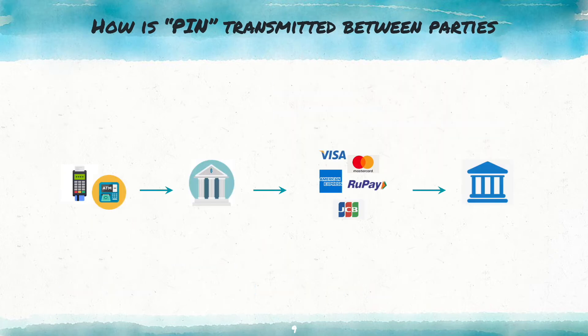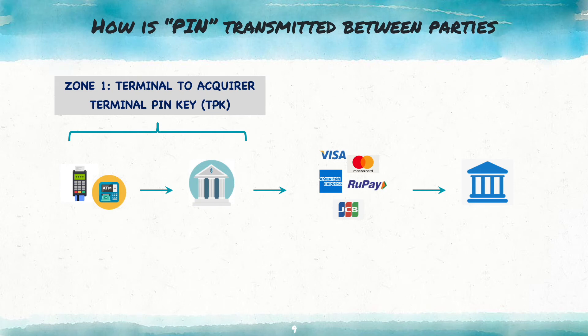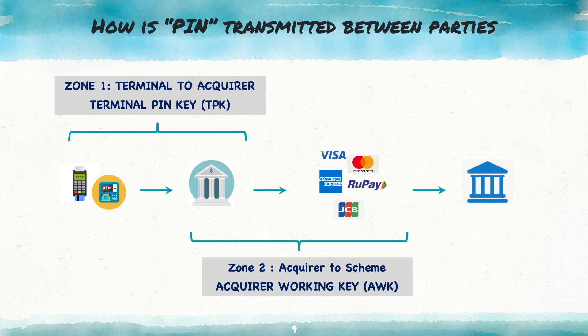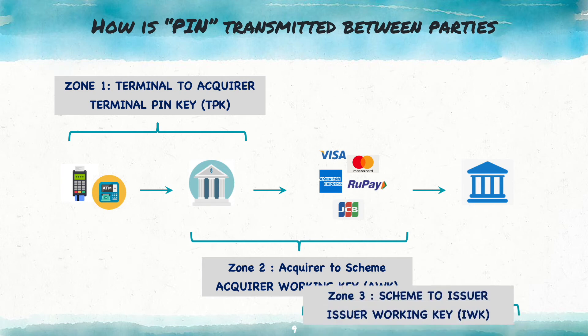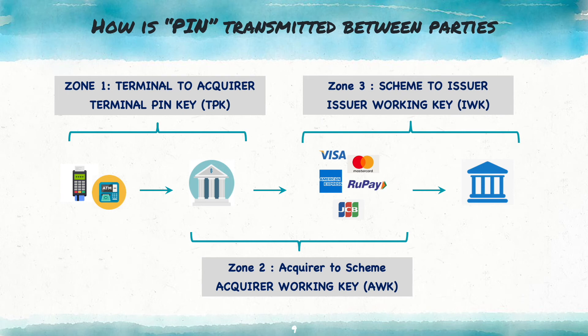The zone PIN key is unique and only known to the two parties within the zone. First, the PIN block is encrypted by the terminal using a unique key shared between the terminal and the acquirer, called the Terminal PIN Key (TPK). Then the acquirer decrypts the PIN block using the TPK and re-encrypts it with the key agreed between acquirer and scheme, called the Acquirer Working Key (AWK). The scheme then translates it into a PIN block using the key agreed between scheme and issuer, called the IWK. This is how the PIN block gets transmitted from the terminal to the issuer.